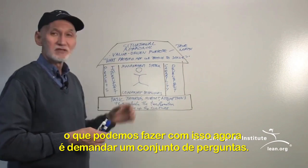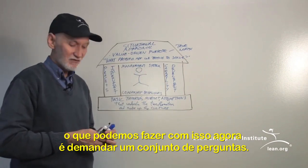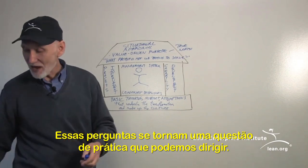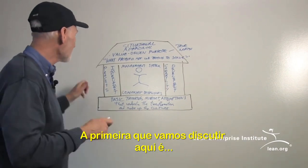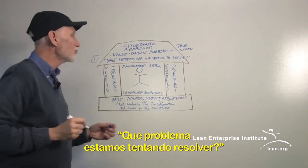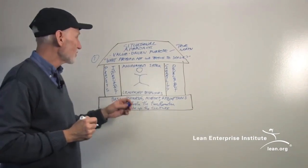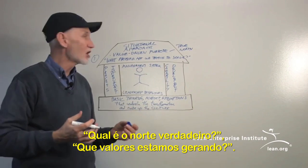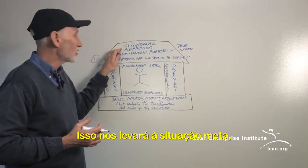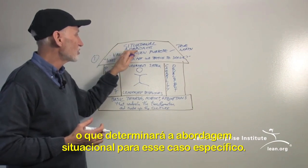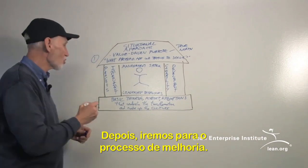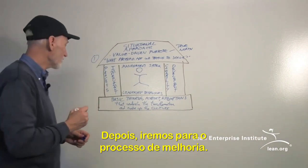What we can do with these five dimensions is turn them into a set of questions — practical matters we can address. The first we've already discussed: what problem are we trying to solve? What is our true north? What value are we providing? This establishes a target condition, which determines the situational approach for this particular case.